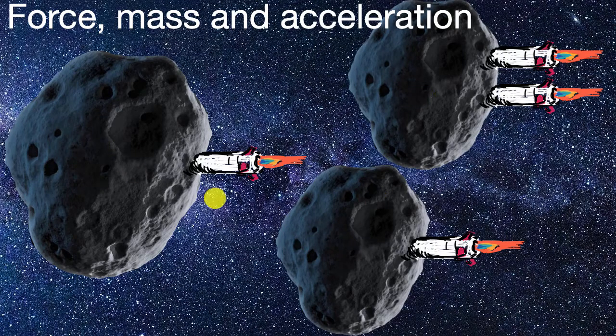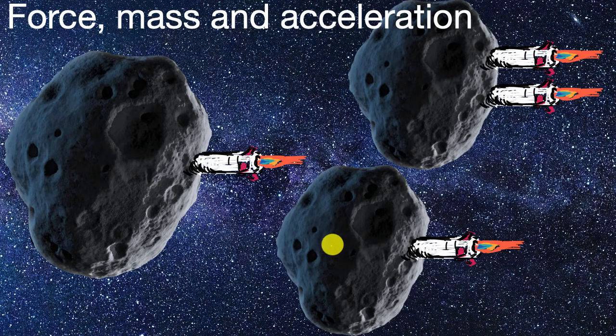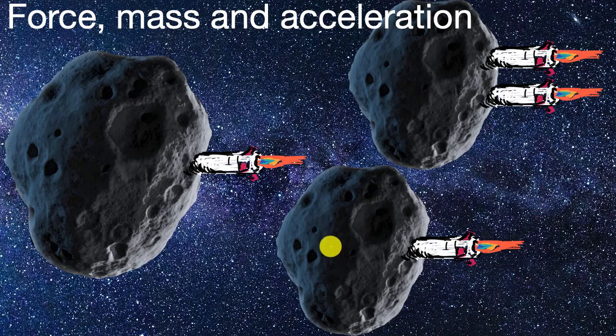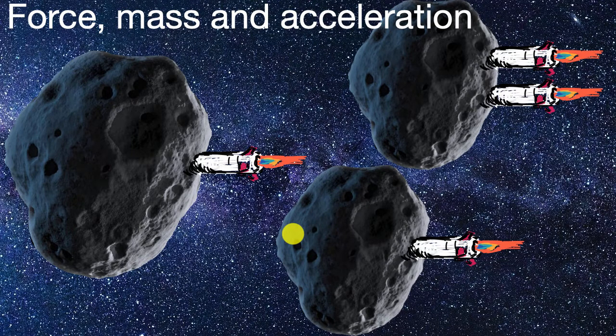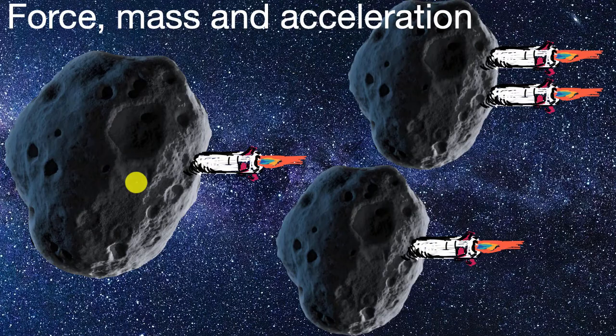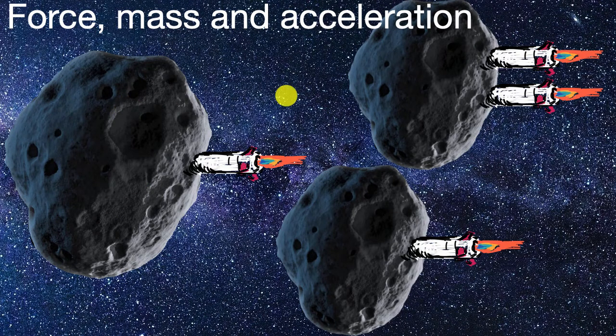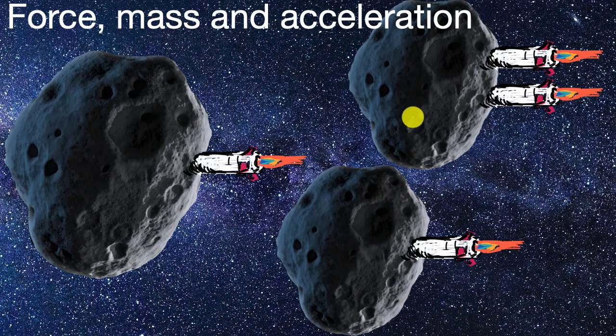So I have three different asteroids over here, and they have different masses. And we'll talk a lot more about what mass means, but one way to think about it is how much stuff there is there. Let's say that this first asteroid is twice the mass of either of these two smaller ones, and these two smaller ones have the same mass.